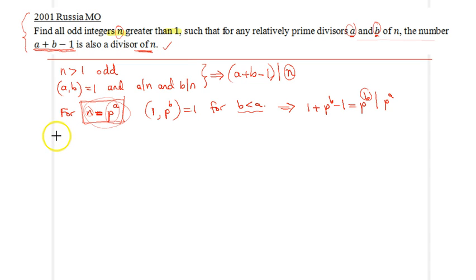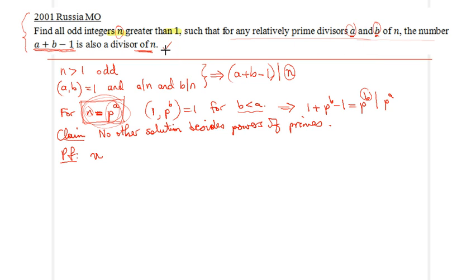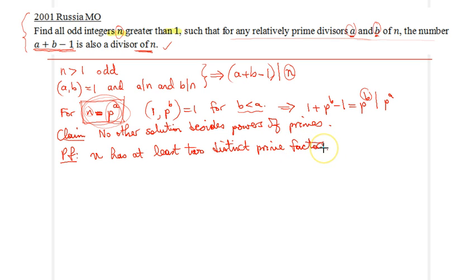Now what I claim next is that this is it — we have no other solution besides powers of primes. We will prove this by contradiction. Let's assume to the contrary that n satisfies the condition given in the problem, and it has at least two distinct prime factors, of which p is the smaller one.